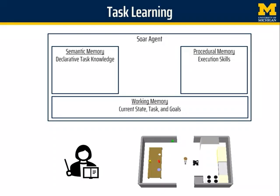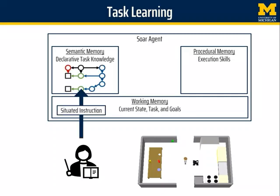Rosie is implemented in the SOAR cognitive architecture. It starts with knowledge of rooms and objects, people, and how to navigate and do simple actions, but has no specific knowledge of performing a guard patrol. As the instructor guides the agent through the task, it creates a declarative task network that connects task arguments, goals, and subtasks.